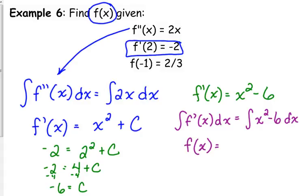What's the anti-derivative of x squared? x cubed over 3. Add 1 to the exponent, divide by the new exponent. Anti-derivative of negative 6. Negative 6x plus C.